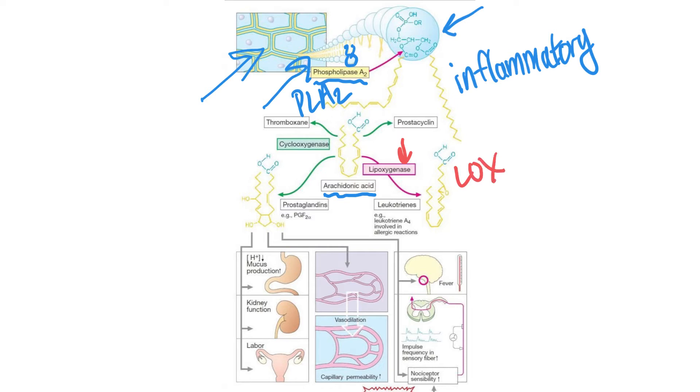LOX breaks down arachidonic acid into component parts called leukotrienes. Leukotrienes are pro-inflammatory proteins. Whenever leukotrienes are created and around, they cause an inflammatory response: redness, swelling, inflammation, excessive blood flow, edema formation. So those are pro-inflammatory proteins created by the LOX enzyme having broken down arachidonic acid.